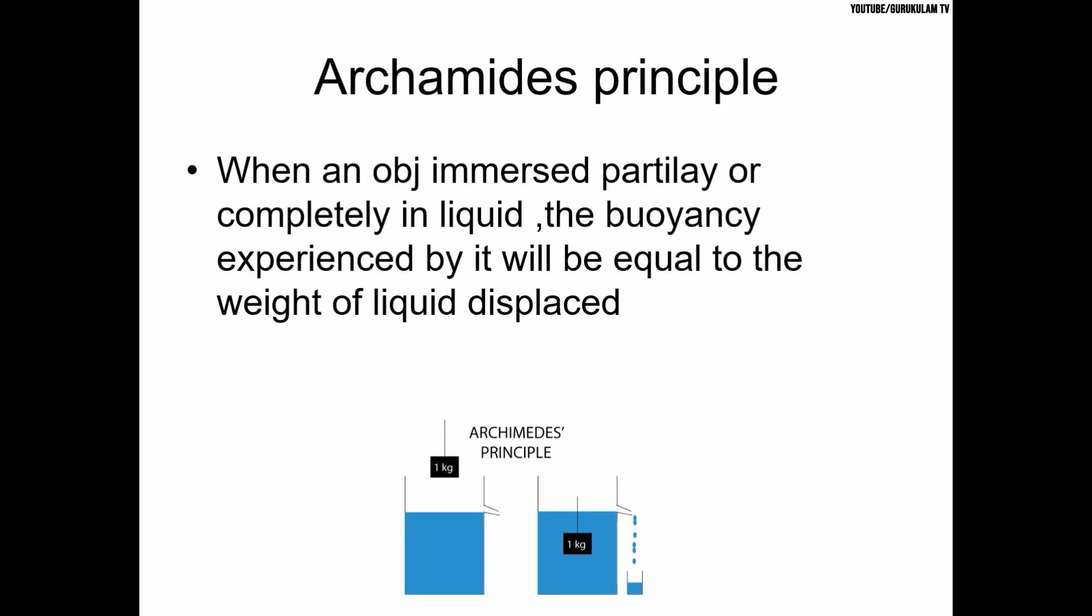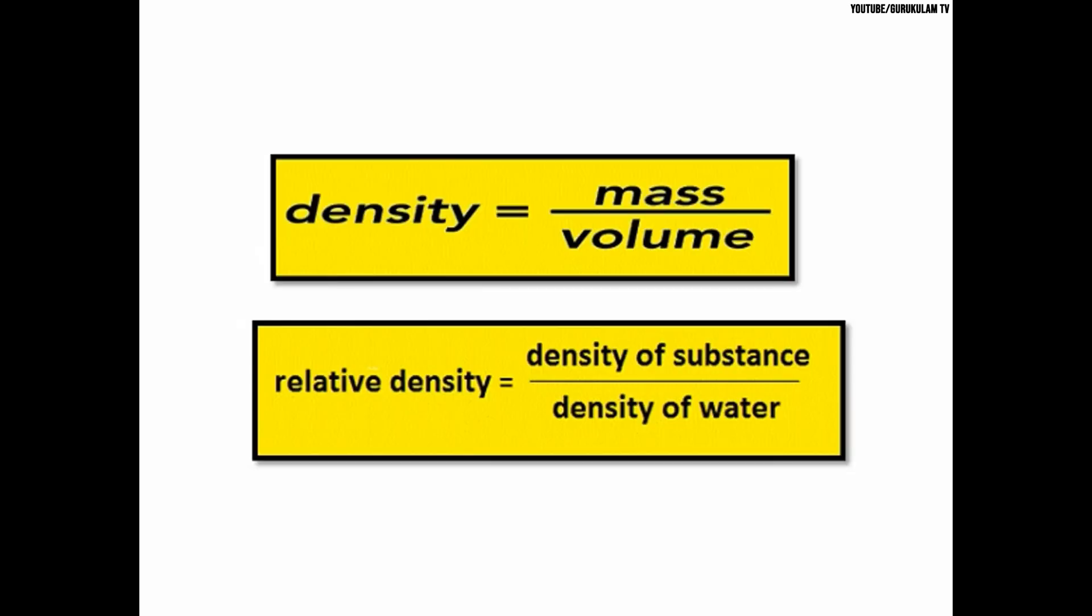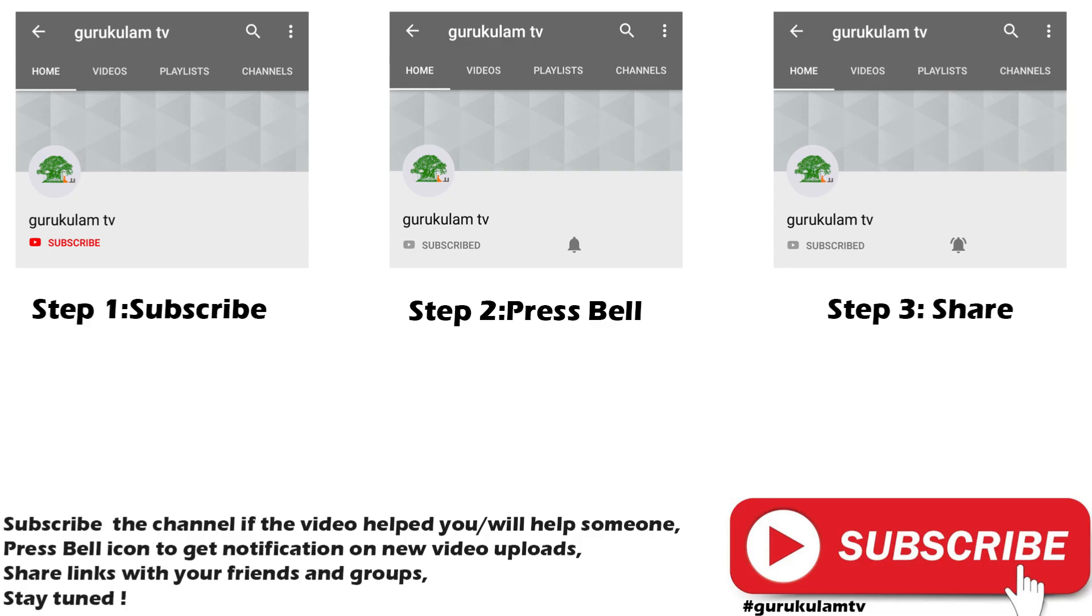Archimedes Principle states that when an object is immersed partially or completely in liquid, the buoyancy experienced by it equals the weight of liquid displaced. Density is mass by volume. Relative density is the density of a substance divided by the density of water.